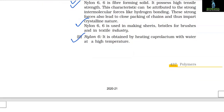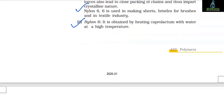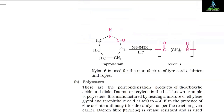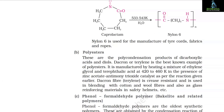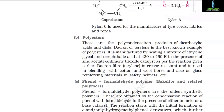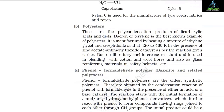2. Nylon 6: It is obtained by heating caprolactam with water at a high temperature (533–543 K). Nylon 6 is used for the manufacture of tyre cords, fabrics and ropes.